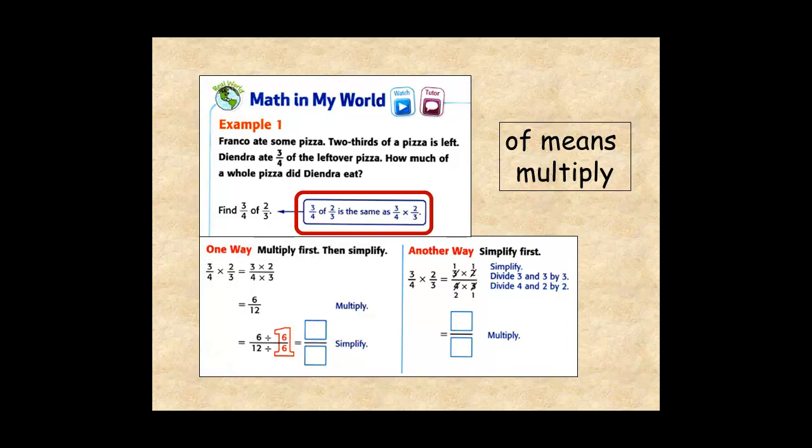Then for the first method, multiply numerators and denominators for 6 twelfths. Then simplify, and the product is 1 half.